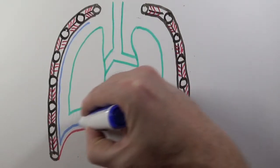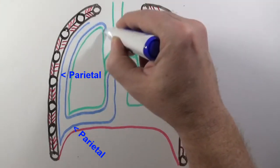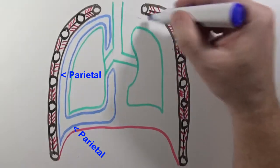Now the blue represents the pleura. On the inner wall of the ribcage and diaphragm, it's the parietal pleura. Parietal means wall.